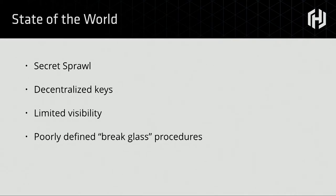The state of the world — what we tend to see everywhere — is what we refer to as secret sprawl. This is a state in which secret material is distributed all over the place: it's in Dropbox, it's in GitHub, it's in Chef and Puppet. There's typically a decentralized management scheme, very ad hoc, limited visibility, limited control, and very little break glass procedure. So if something goes wrong and we need to revoke — what do we actually do? It tends to be poorly defined.